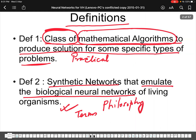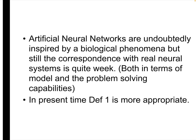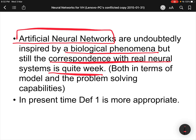Artificial neural networks are inspired by biological phenomena, but the correspondence with real neural network systems is quite weak — both in terms of model and problem-solving capability. We should not take them as equivalent to a human brain, because the terminology sometimes suggests similarity to the human brain in terms of model or problem-solving capability, but it is not that powerful. So definition one — the mathematical model — would be more appropriate in the present context.